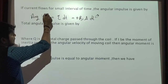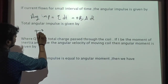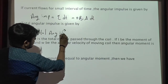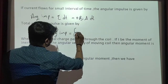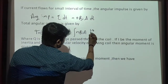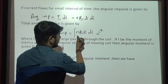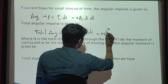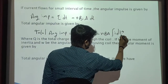If you integrate the angular impulse, we will get the total angular impulse. Total angular impulse equals the integration of N into B into I into A into dt. Now, N, B, and A are constants, so I am taking these terms outside: N into B into A, multiplied by the integral of I dt.